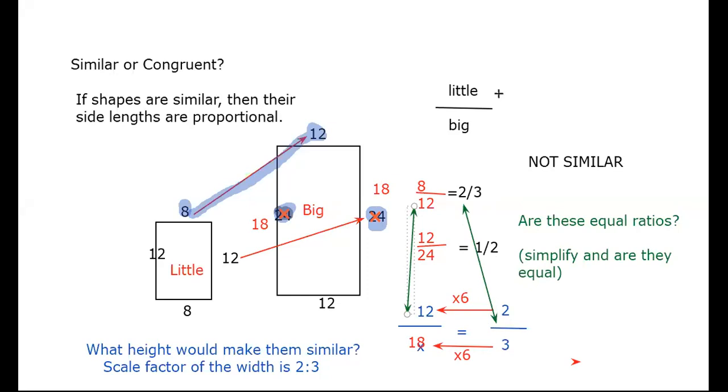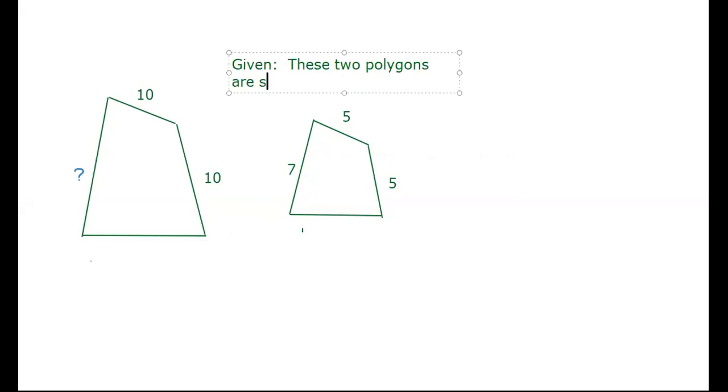So let's look at an odd little polygon. That one and this one. Let's put some measurements with this. So we have 10, and we have 10, and we have 5, we have 5, we have 7, and we have a missing side. What missing side length if you know these are similar? So you're given these two polygons are similar. Find the missing side length.